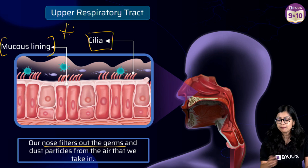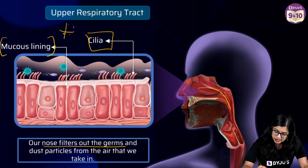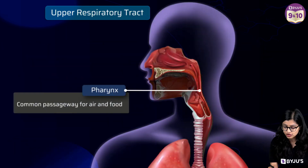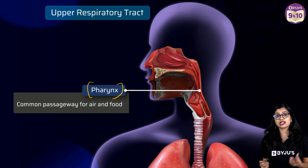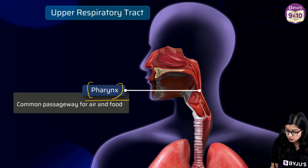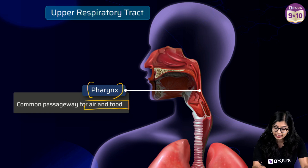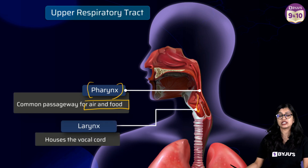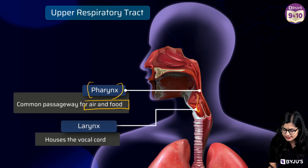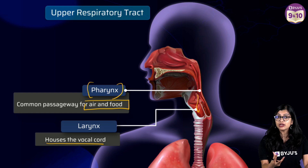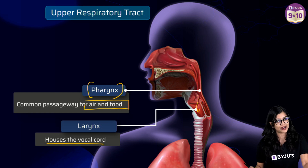Once air passes through the nasal chamber, it proceeds downwards and enters a common opening called the pharynx. The pharynx is a common passageway for both food and air. From here, the air takes a different journey and moves into the next part, which is the larynx. The larynx is often referred to as the voice box — it houses the vocal cords, and we are able to speak and communicate with the help of our larynx.